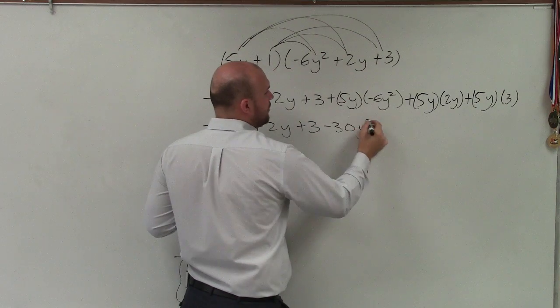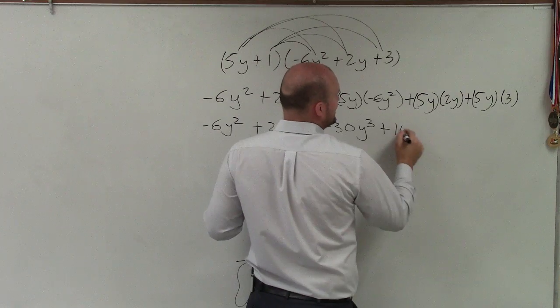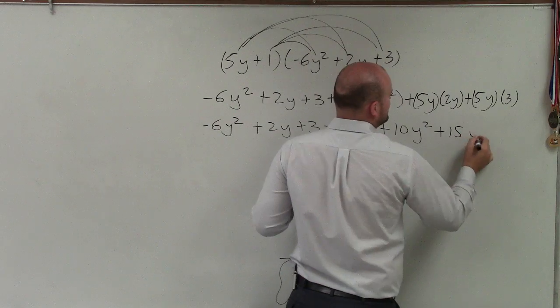y times y squared is y cubed. Remember, we add the exponents. Plus 5 times 2 is 10, y times y is y squared. And 5 times 3 is a positive 15y.